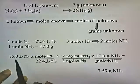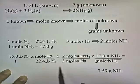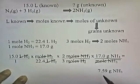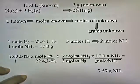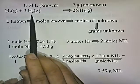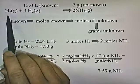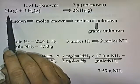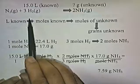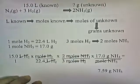15 times 2 times 17 divided by the product of 22.4 and 3 gives us 7.59 grams of NH₃. What this means is that if you completely react 15 liters of hydrogen gas with an unlimited amount of nitrogen, you'll produce 7.59 grams of NH₃.